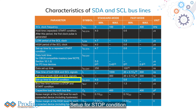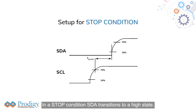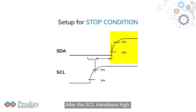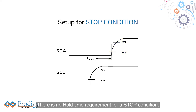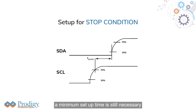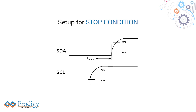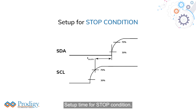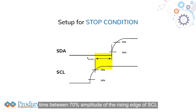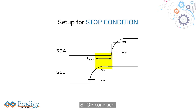Setup for Stop Condition: In a stop condition, SDA transitions to a high state after the SCL transitions high. There is no hold time requirement for a stop condition; however, a minimum setup time is still necessary. Setup Time for Stop Condition, TSU STO, is measured as the time between 70% amplitude of the rising edge of SCL, and 30% amplitude of a rising SDA signal during a stop condition.